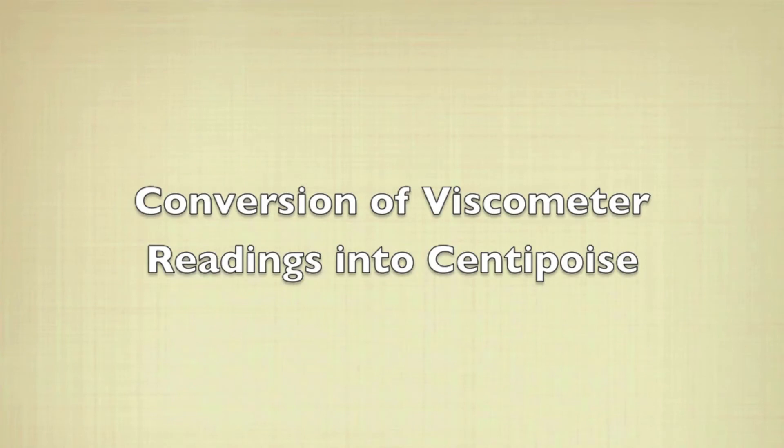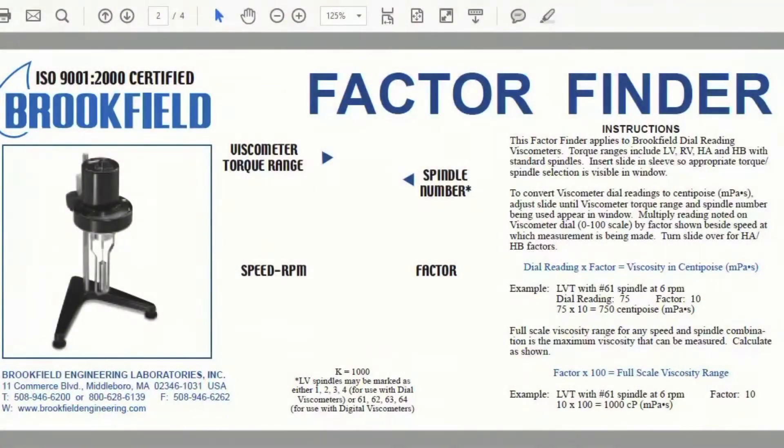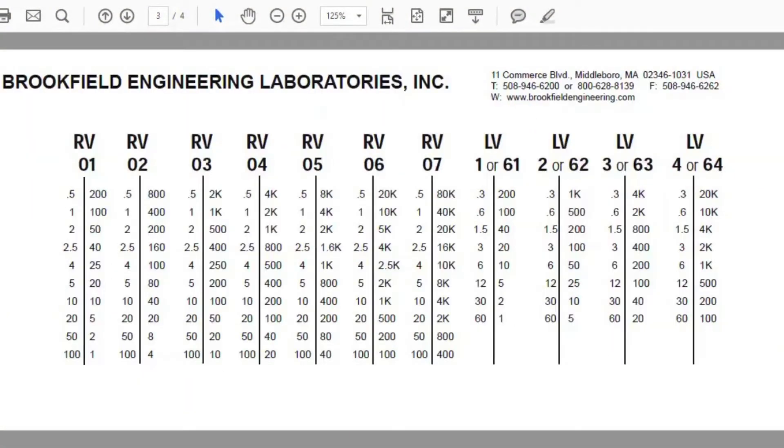To convert the viscometer readings into centipoise, the Factor Finder PDF from Brookfield Engineering can be used. This PDF comes with an array of conversion charts.